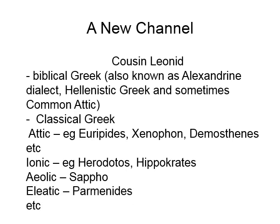The last dialect mentioned is Eleatic. The philosopher Parmenides, from the 6th century BC, actually came from southern Italy — what we now call southern Italy. There were Greeks who lived there; it was not a single country at that time.